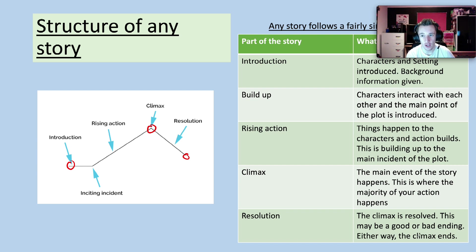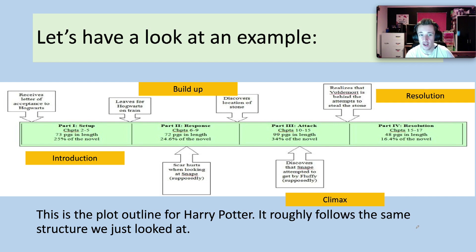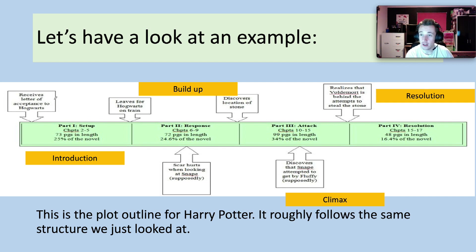With a suspense story, the end of the story tends to be the climax — we don't get to see the resolution. So this is an example of a normal story. This is the rough structure of Harry Potter, the first book. The introduction of Harry Potter is basically where he receives the letter accepting him to Hogwarts, he goes to Diagon Alley, he meets Hagrid, and then he leaves for Hogwarts on the train. So we're introduced to the character Harry Potter, some of the other characters — Ron Weasley, Hermione Granger, Hagrid, the Dursleys — and then he leaves on the train.